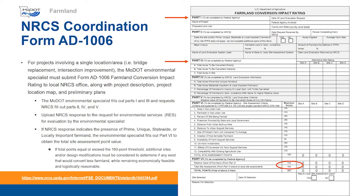When a project requires new right-of-way and/or easements outside a designated urban area, the MoDOT Environmental Specialist must submit form AD-1006, Farmland Conversion Impact Rating, to the local NRCS office. A project description, project location map, and preliminary plans showing the area of conversion must be provided to NRCS. The AD-1006 form can be found at the link on this slide. Detailed instructions for completing each section are provided on page 2 of the AD-1006 form. On the form, the MoDOT Environmental Specialist will fill out parts 1 and 3 and request that NRCS fill out parts 2, 4, and 5.